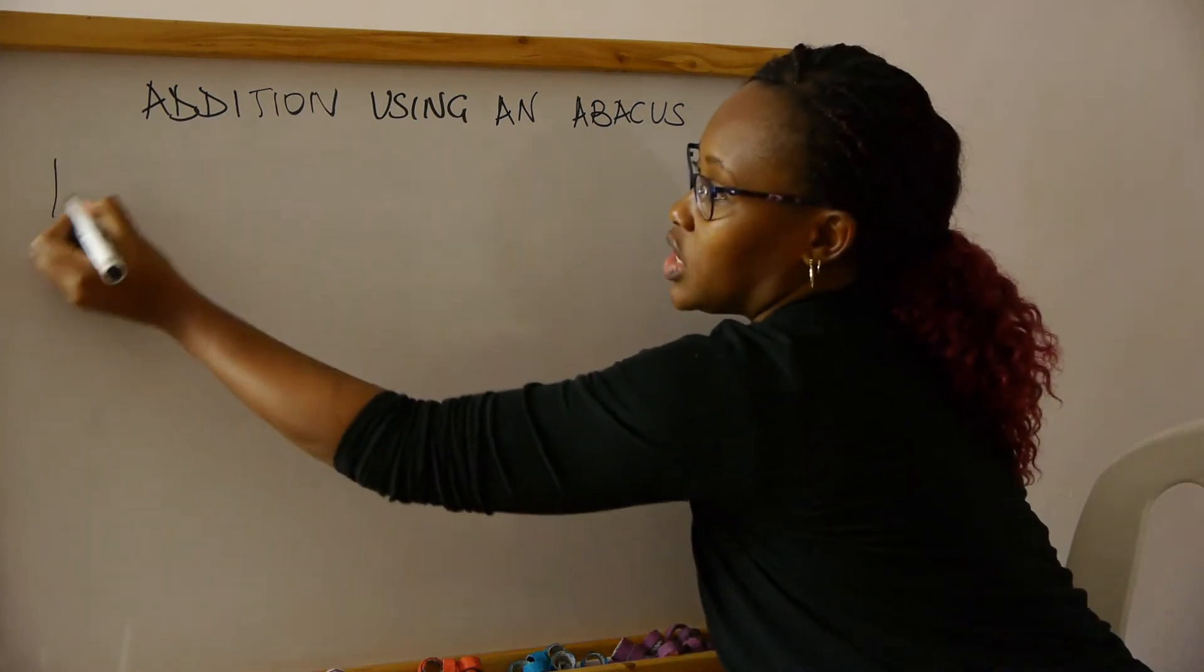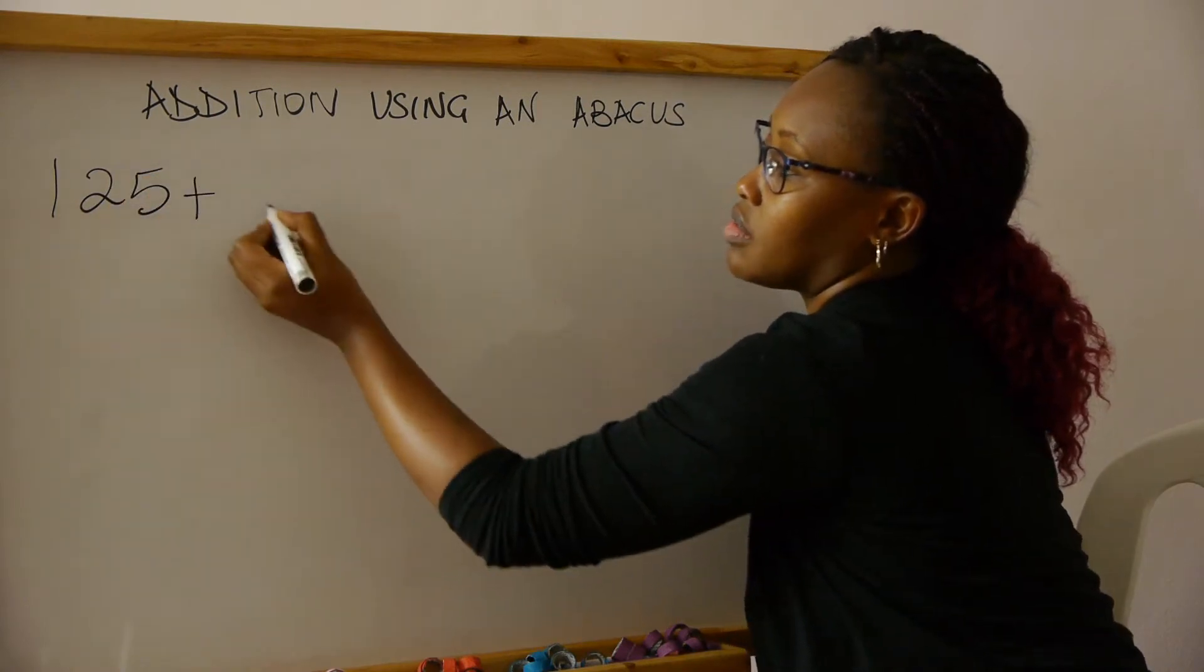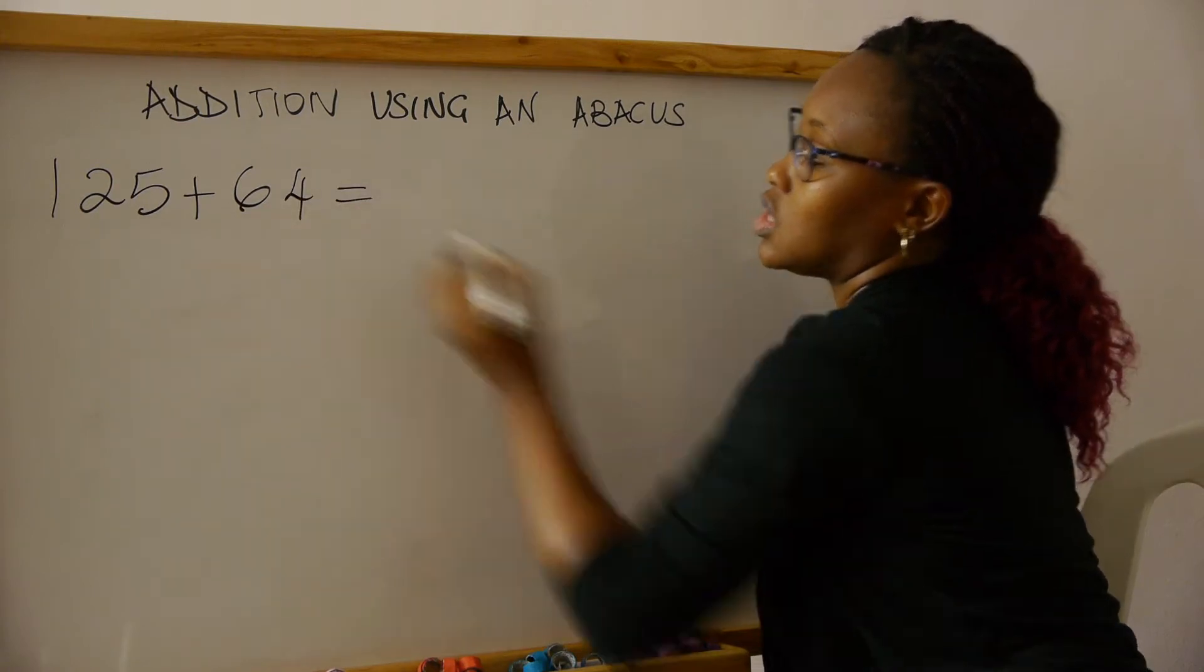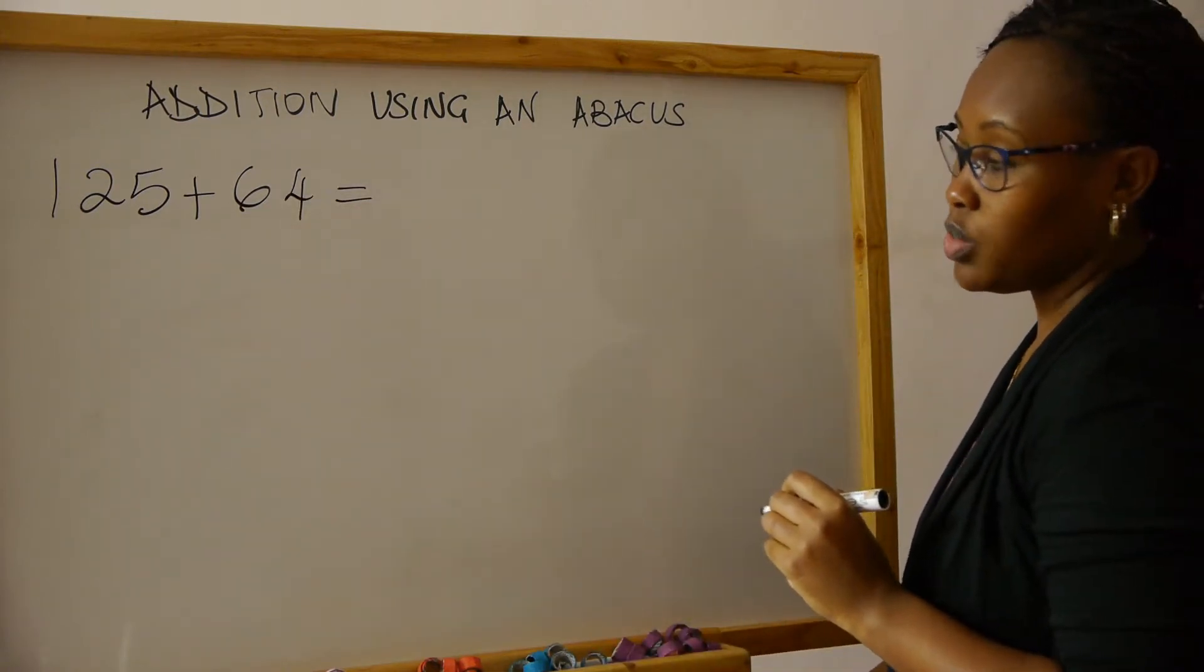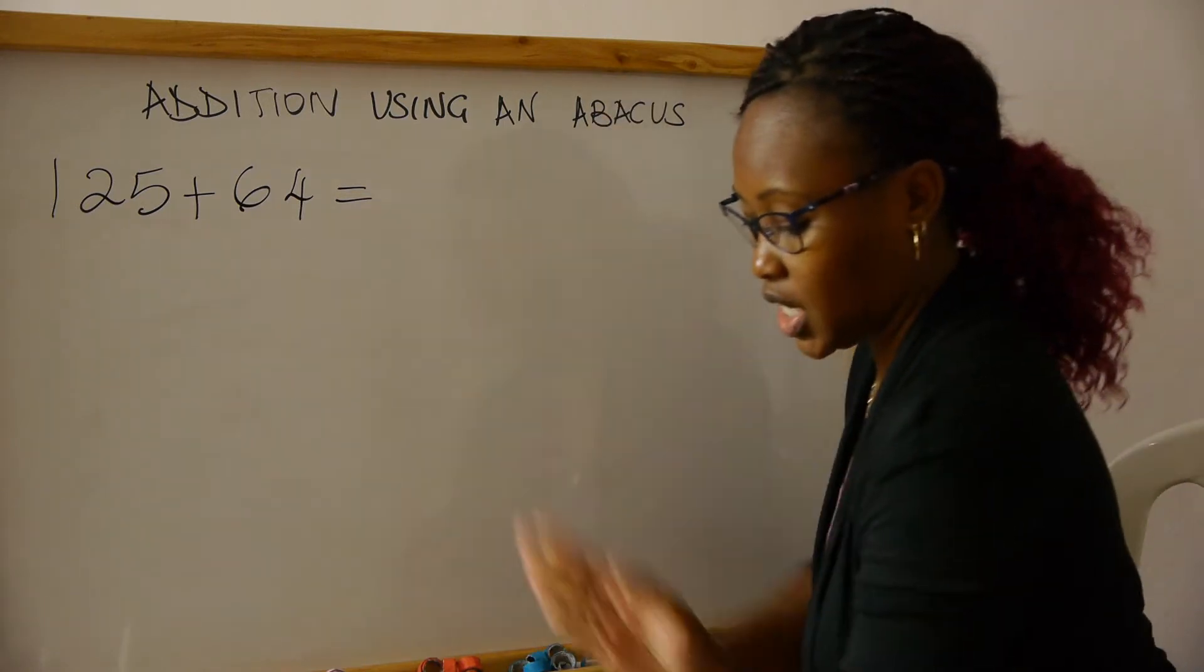125 plus 64 equals. The first step we need to do is to write this sum vertically.